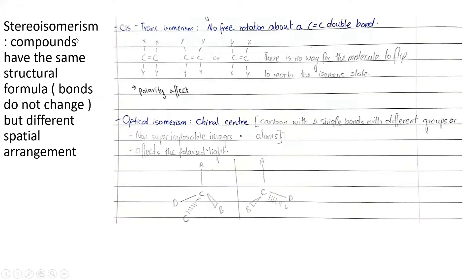Okay, stereoisomerism. Basically, the definition is compounds are the same structural formula. The bonds do not change. That's what you need to take note of. But they have different spatial arrangement. A good example for this is cis-trans isomerism. There's no free rotation about a carbon double bond because of the overlap between the sigma, sorry, overlap between the pi bonds. So they can either produce these three. And there's no way for the molecule to flip to reach the other isometric state. So a quick note for this is you need to make sure that there's, you need to take note there's a polarity difference. If these are electronegative compounds, then the polarity will be different. So you just need to take note of that. It'll be X, Y, Y, X, or Y, X, Y, X. So you just need to take note of that. They'll be different and they cannot be reformed in any arrangement.